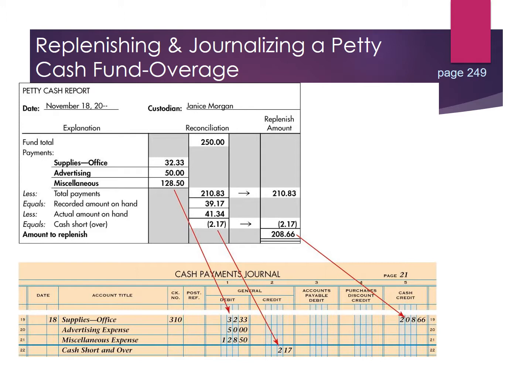Filling out a petty cash report when we have an overage. Step 1: write the date and custodian name. Step 2: fill in the fund total of $250. Step 3: record a description for each payment. Step 4: add up payments for a total of $210.83, carried to the fourth column. Then determine the recorded amount on hand by subtracting $210.83 from $250, which gives $39.17 — the amount needed in the petty cash box.